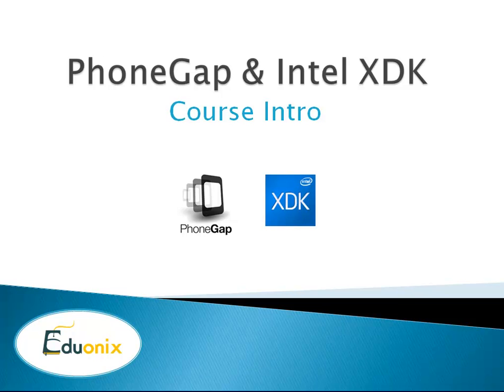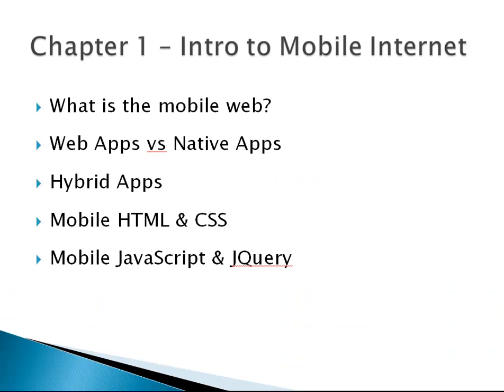Hello and welcome to the PhoneGap and Intel XDK course by Eduonics. This course will be all about mobile web app development using web standards like HTML5, JavaScript, and CSS3. In Chapter 1, we'll discuss the mobile internet in general, including what a web app is, what a native app is, and the difference. We'll also talk about hybrid apps, which is basically what we'll be building. The apps will appear as a native app but will actually be written in HTML5, JavaScript, and CSS. We'll use PhoneGap and Intel XDK to provide that native environment for us.